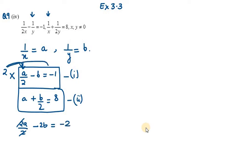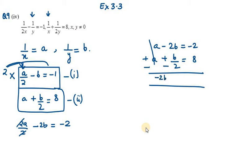My equation 1 is a minus 2b equals minus 2, and the second equation as it is here, that is a plus b by 2 equals 8. Now we need to subtract these two terms. The first one, a plus will become minus, so a minus a is 0, minus 2b minus b by 2 equals minus 2 minus 8, which will be minus 10.